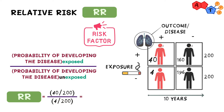Now if we put it all together, the equation is: the probability of getting cancer if you're a smoker over the probability of getting cancer if you're a non-smoker — in other words, the probability of developing the disease if exposed to the risk factor divided by the probability if not exposed. If we simplify, we get 10 as our relative risk. This means that if you were a non-smoker and decided to start smoking, you increased your risk of developing lung cancer by 10-fold — going from a 2% chance to a 20% chance, which is a 10-fold difference.